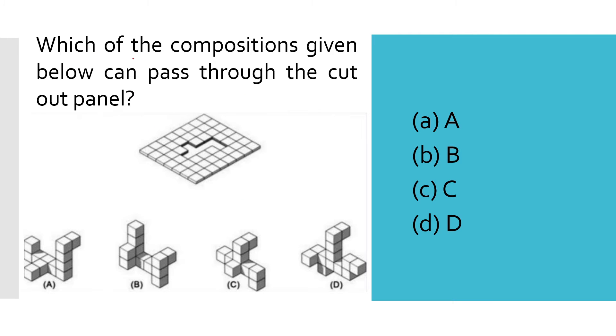Next question: Which of the compositions given below can pass through the cutout panel? This is the seed, you can say, and we have this cutout panel. If you try to pass them, which one can be passed? Let's see one by one.